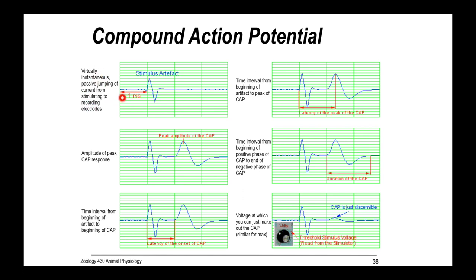Another thing to be aware of is that the stimulus is huge. You're going to observe a stimulus artifact always. So don't record that. That's not your data. That's the stimulus. But after you pass a threshold, you'll start to see the CAP. You can measure the amplitude of the CAP, the peak amplitude. You can measure the timing from the beginning of the stimulus to the beginning of the CAP. You can measure the latency of the peak of the CAP. You can measure the duration of the CAP. Then you can also vary the stimulus intensity and find the voltage at which you can just make up the CAP.